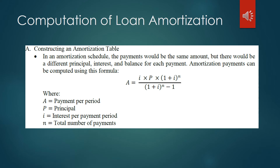For the computation of loan amortization, we have the following formula. In an amortization schedule, the payments would be the same amount, but there would be different principal, interest, and balance for each payment. Amortization payments can be computed using this formula: I — the interest payment per period — times P, the principal, times (1 + I) raised to N, divided by (1 + I) raised to N minus 1. Here, I is your interest payment per period and N is your total number of payments, depending on the term — whether monthly, quarterly, or semi-annual.